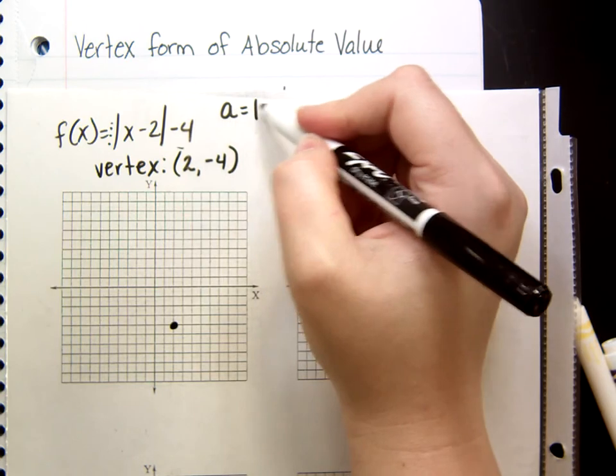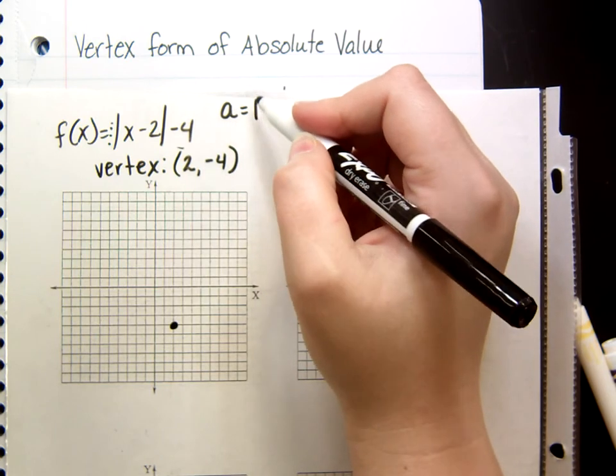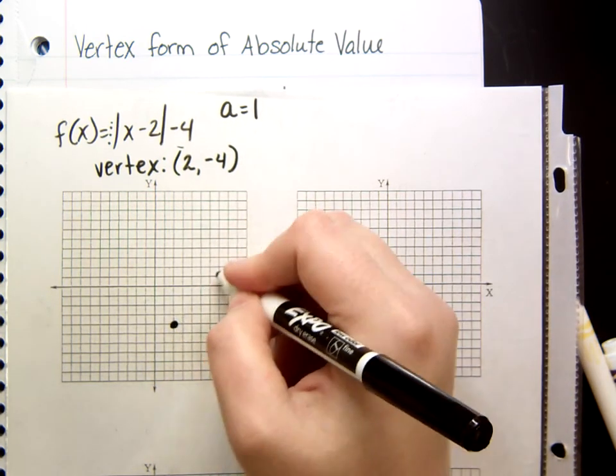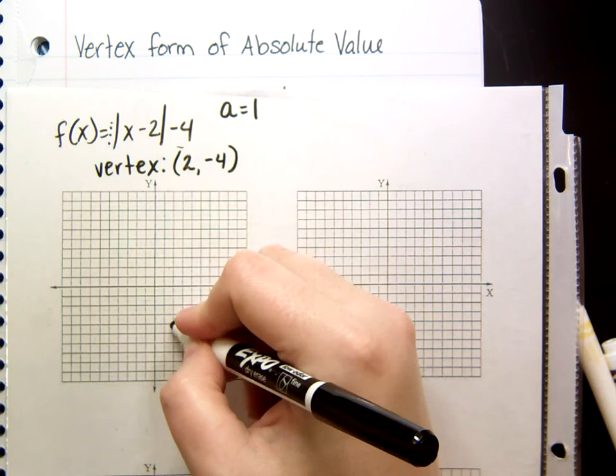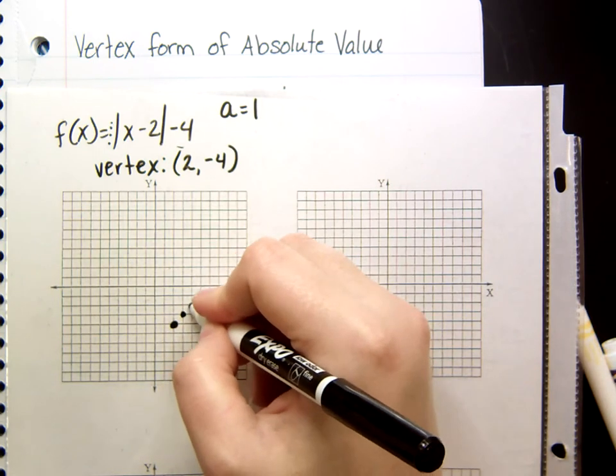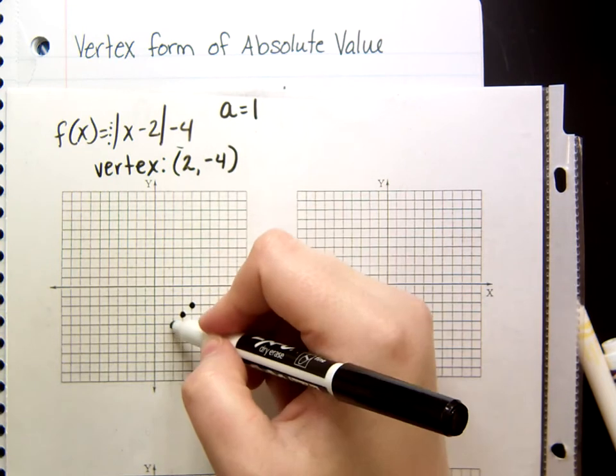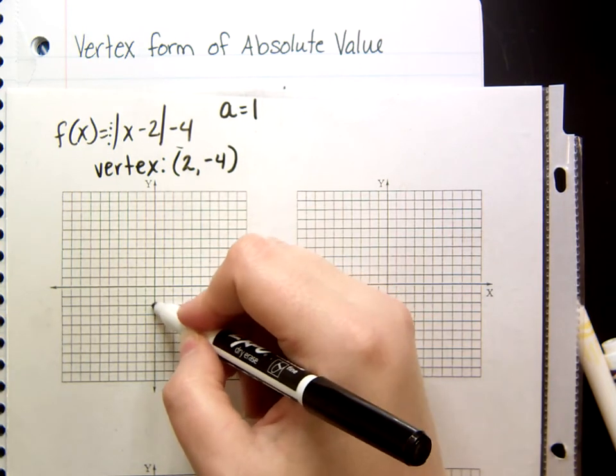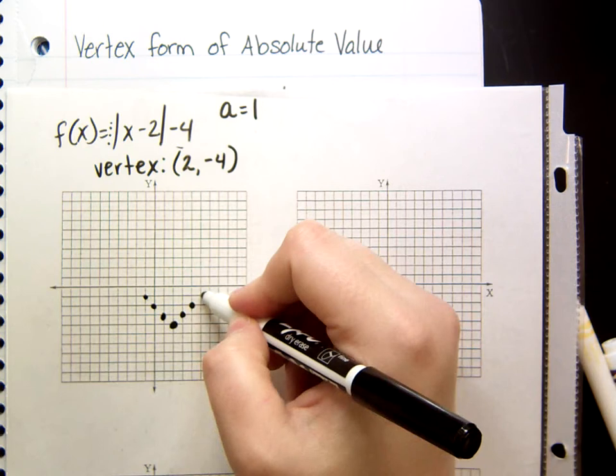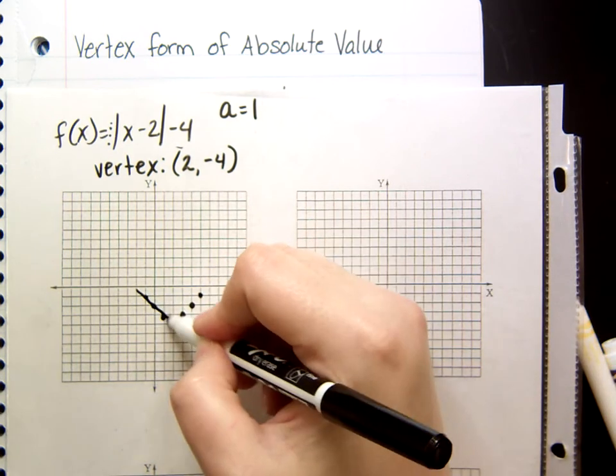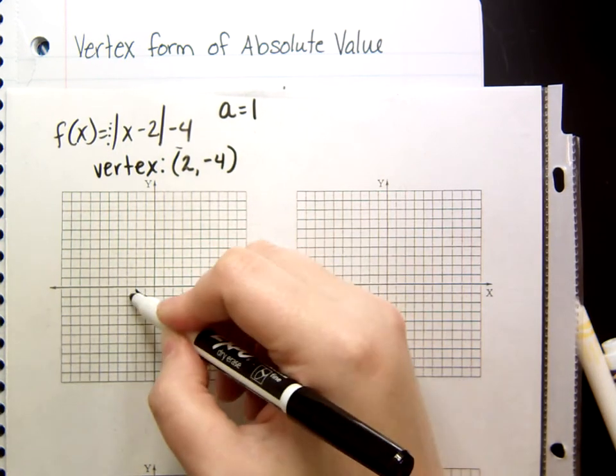And then a, my 1, is my slope to the right of my vertex. So, rise over 1, up 1, over 1. On the other side, it's negative 1. So, I go up and left instead of right. And I can extend it out pretty far, but that's probably good enough.